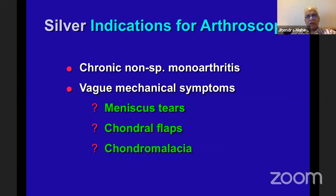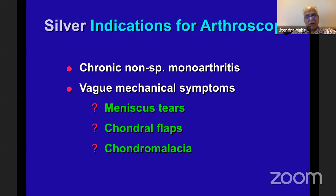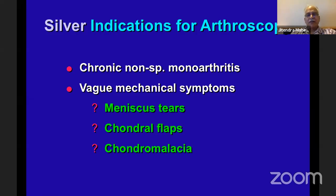Other silver indications include non-specific monoarthritis where you want a diagnosis — more or less a biopsy situation — and vague mechanical symptoms when enough conservative treatment has been done and something may be found inside. These silver indications are 'may benefit' type. Give it enough time, do tests once, maybe twice, sometimes repeat MRI over three or four months. Patients are willing to pay for tests, which can indicate if things are progressing. Otherwise, just hold on.